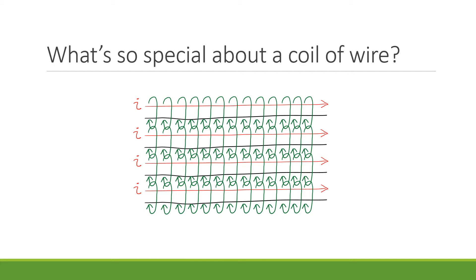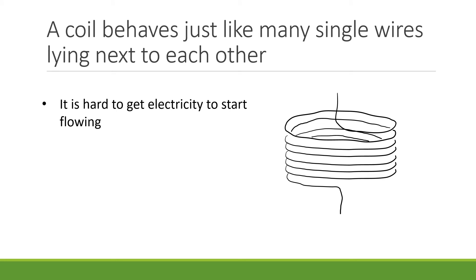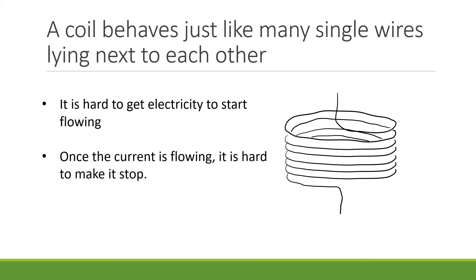By the same token, when the electricity is moving, it's hard to get it to stop, because if you try to make it stop, it's kind of getting pulled along by the electricity that's moving next to it. So in other words, it's hard to get the electricity to start moving, and once it's going, it's hard to make it stop again. It turns out that a coil behaves just like many single wires lying side by side. So just like with the single wires, it's hard to get electricity to start flowing through a coil, and once the current is flowing, it's hard to make it stop.